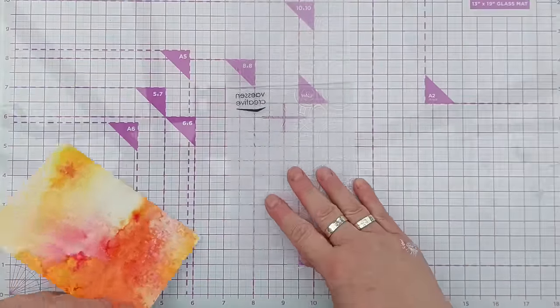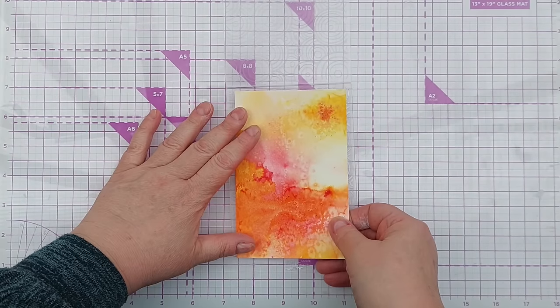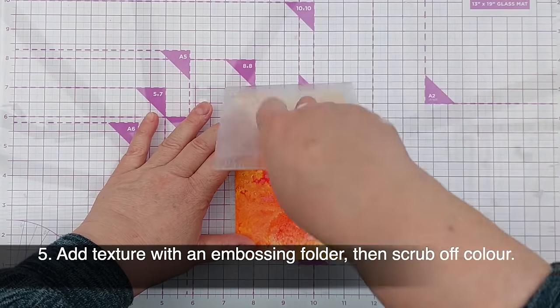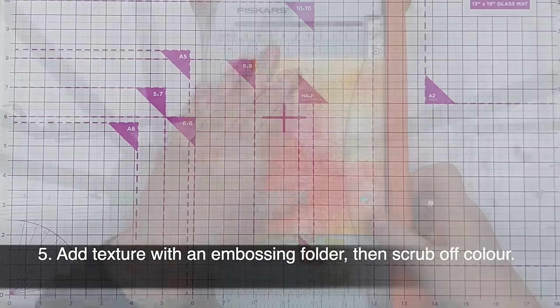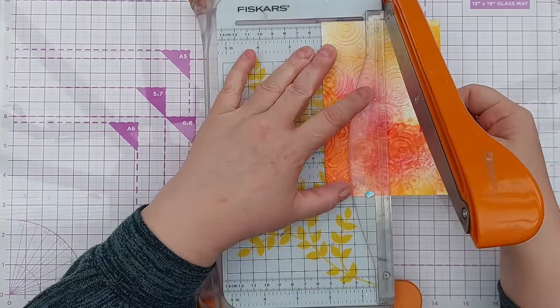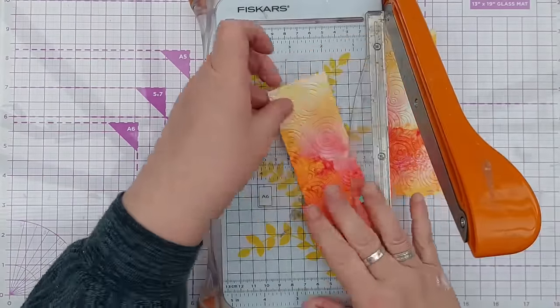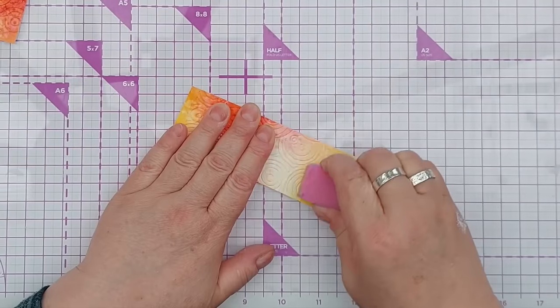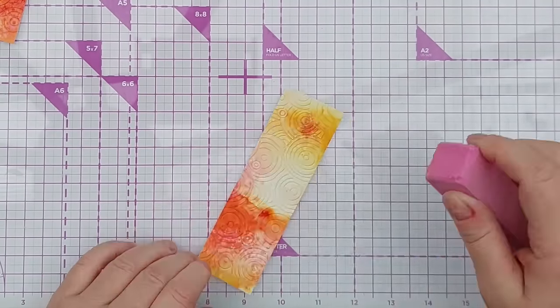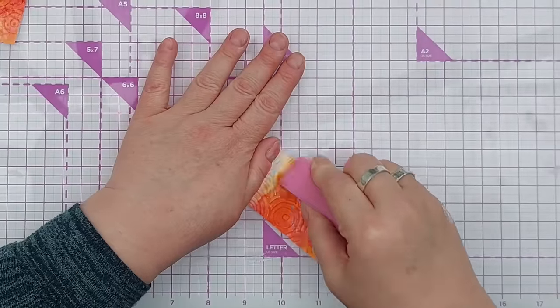Onto technique number five now and that is to add texture with an embossing folder and then scrub off some of the colour. So I ran this very bright pigment powder panel through my cuttlebug with a circle pattern embossing folder.